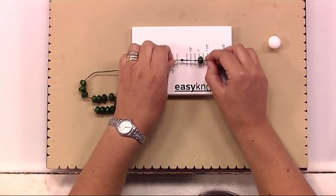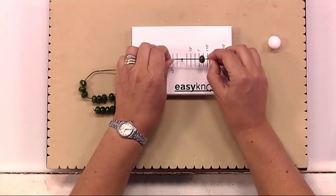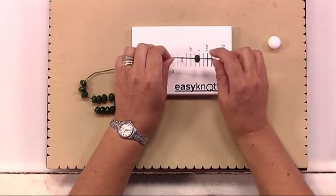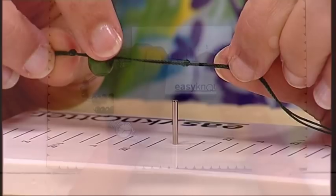Pull that tight, lift off the knotting tool, and now there's an inch between the bead and the knot.